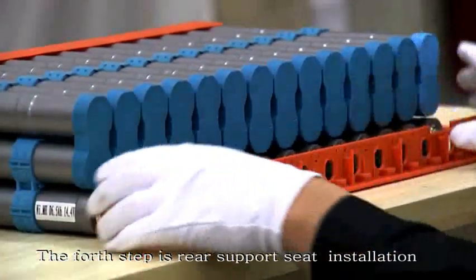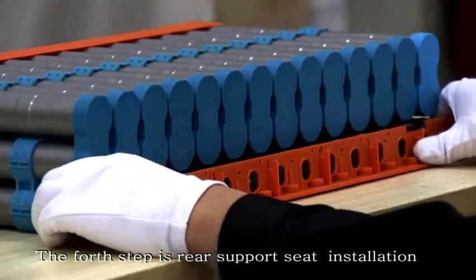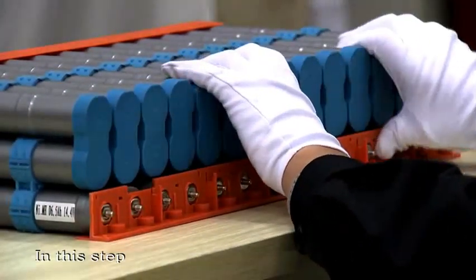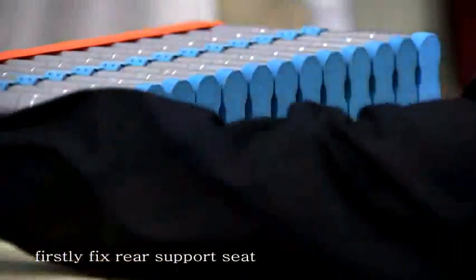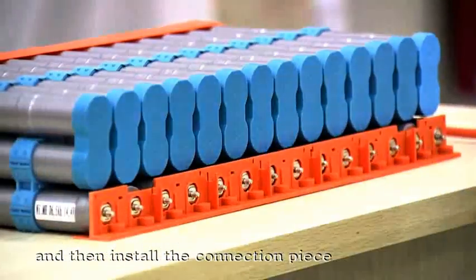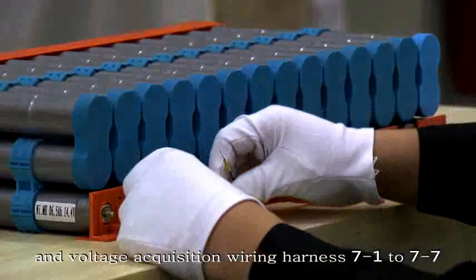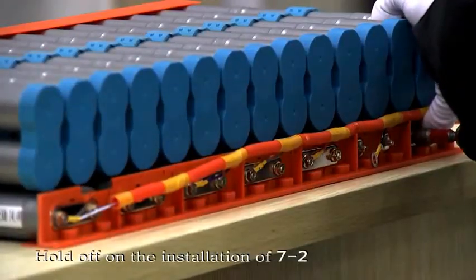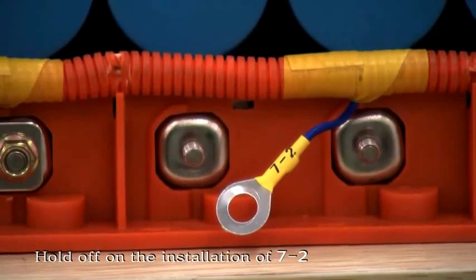The fourth step is rear support seat installation. In this step, firstly, fix rear support seat, and then install the connection piece and voltage acquisition wiring harness 7-1 to 7-7. Hold off on the installation of 7-2.